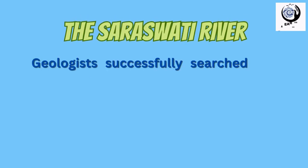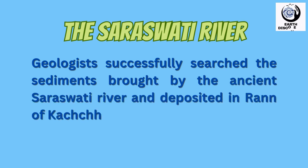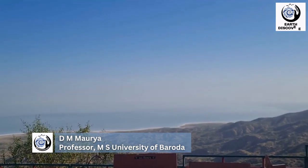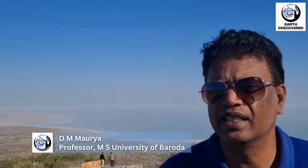Geologists successfully searched for sediments brought by the ancient Saraswati river and deposited in the Rann of Kutch. The geological problem to identify was how such a thick volume of sediment was deposited. Based on two deep cores — about 60 meters and 50 meters — we analyzed the sediments for strontium-neodymium isotopes in collaboration with the Physical Research Laboratory, Ahmedabad. This study shows that the sediments here are different from the Indus delta — previously it was thought that Indus sediments had been redistributed within the Rann margin, but this study demonstrates they are very different.